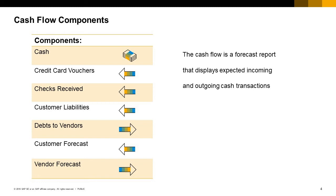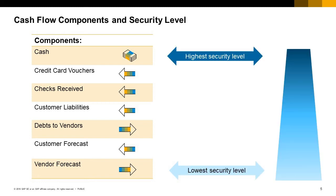In the image, you can see the list of these cash flow components. A security level is the level of probability that the transaction will turn to cash, incoming and outgoing. The probability that a cash flow transaction can be expected varies considerably. For this reason, each component balance has a different security level.